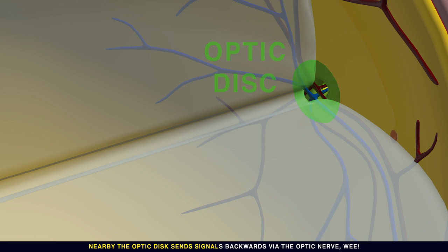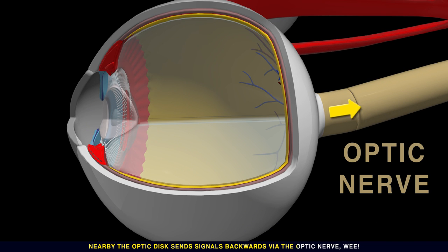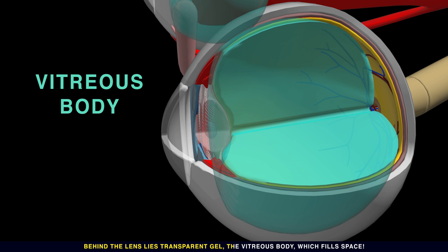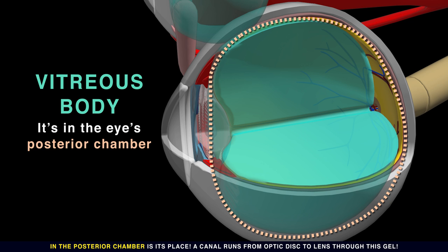Nearby, the optic disc sends signals backwards via the optic nerve. Behind the lens lies transparent gel, the vitreous body, which fills space in the posterior chamber.